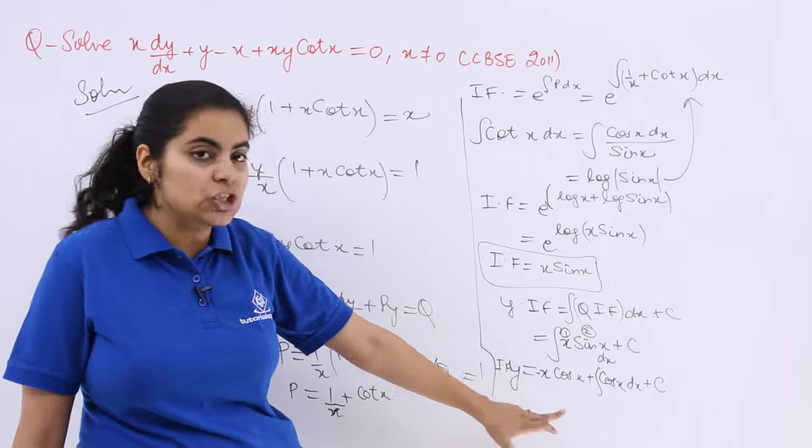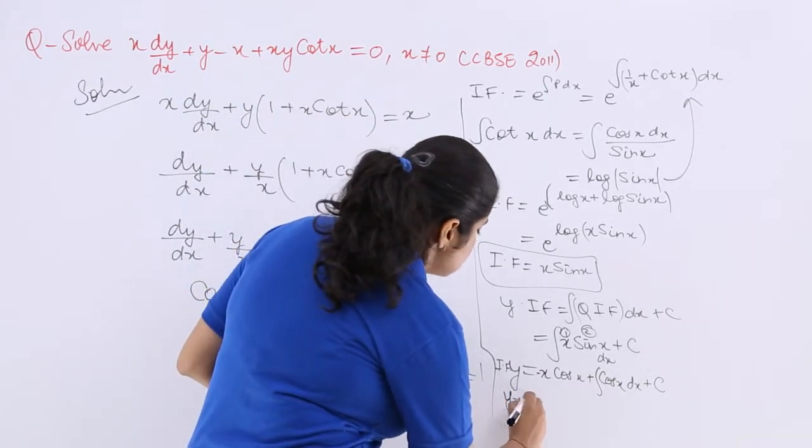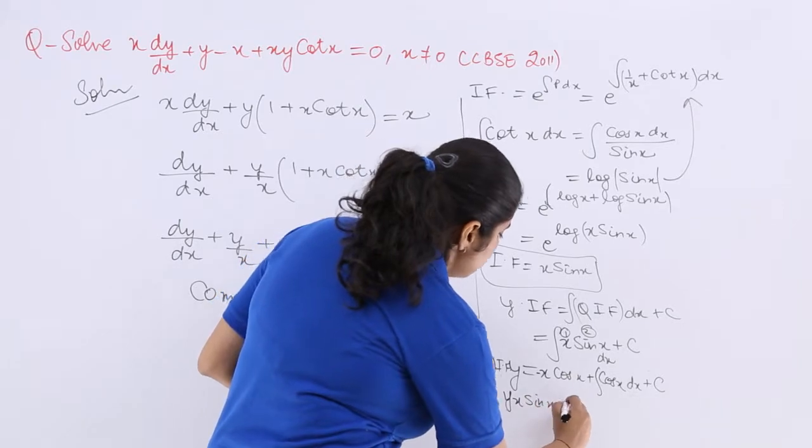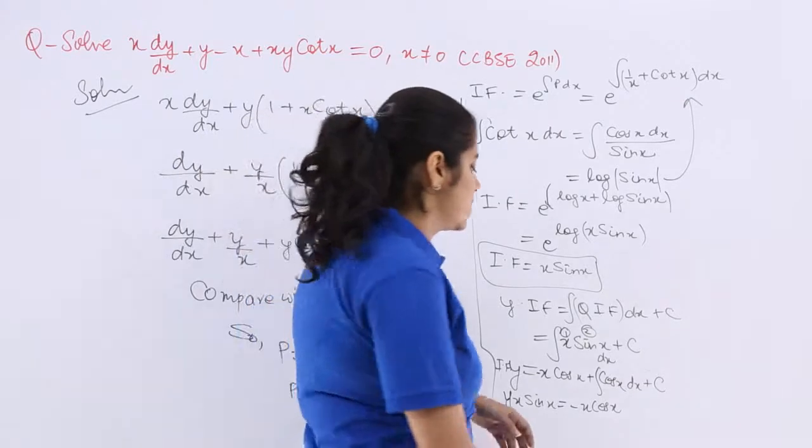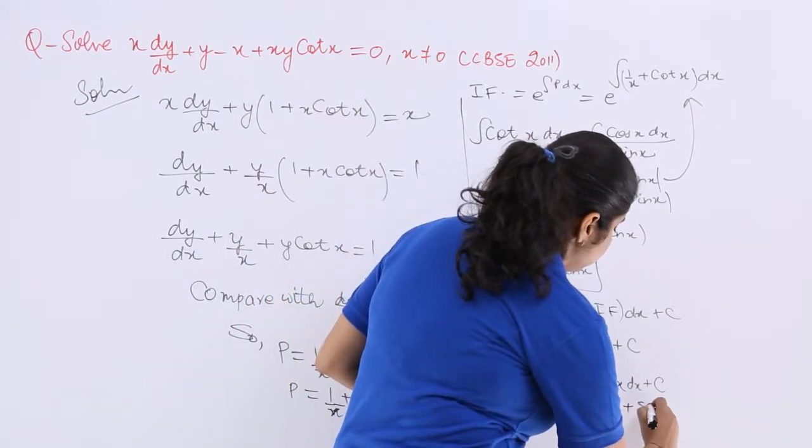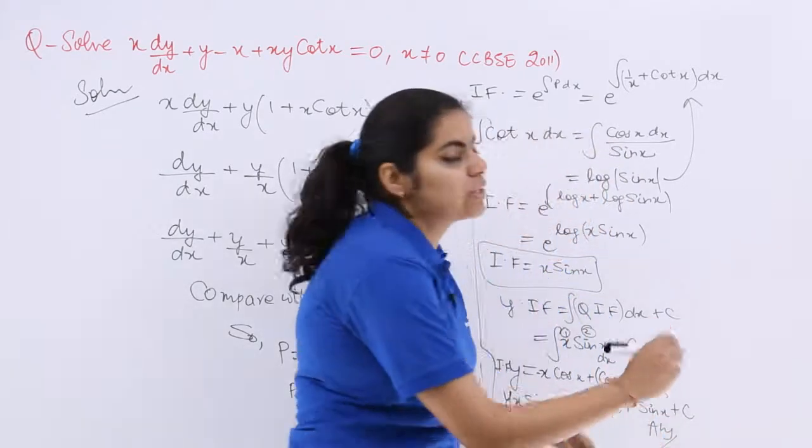Now what should be there as the next step? The next step is simply multiplication of integrating factor and y. So y into x sin x is equal to minus x cos x, then cos x integration is sin x plus c, and that is the answer to this question.